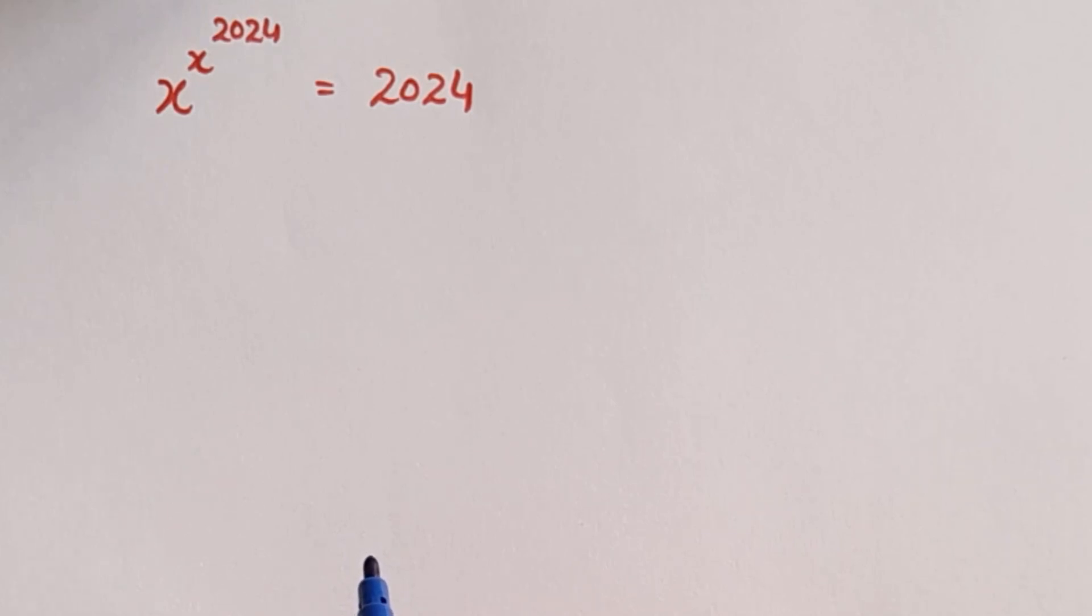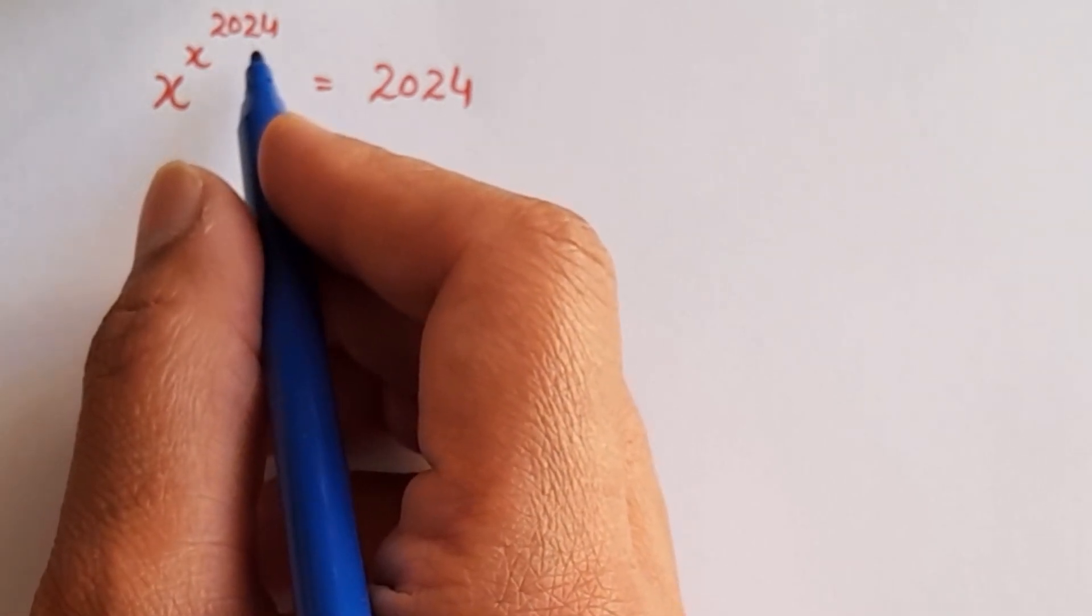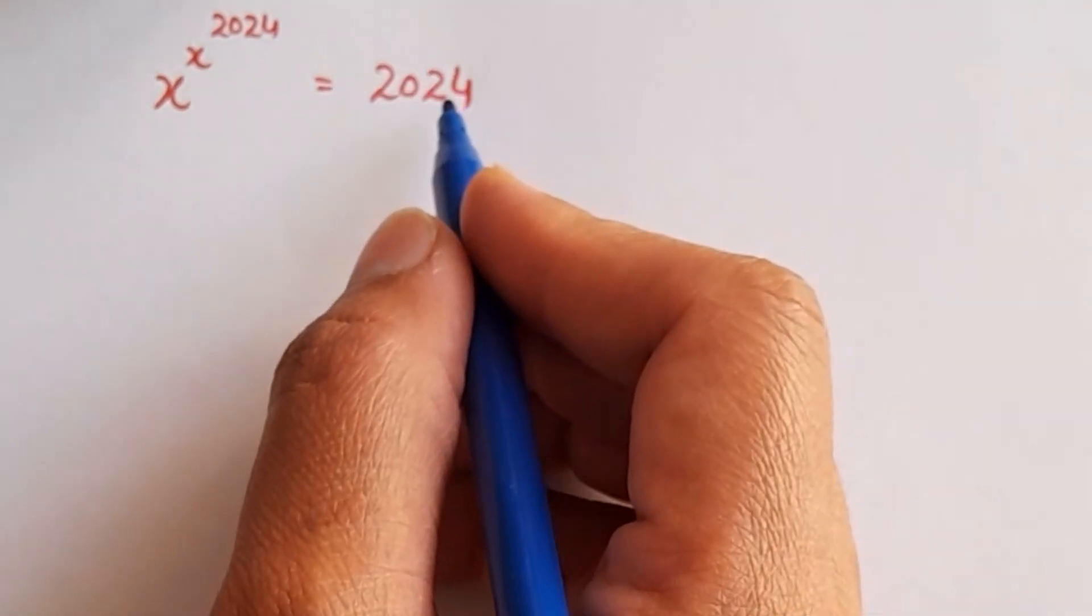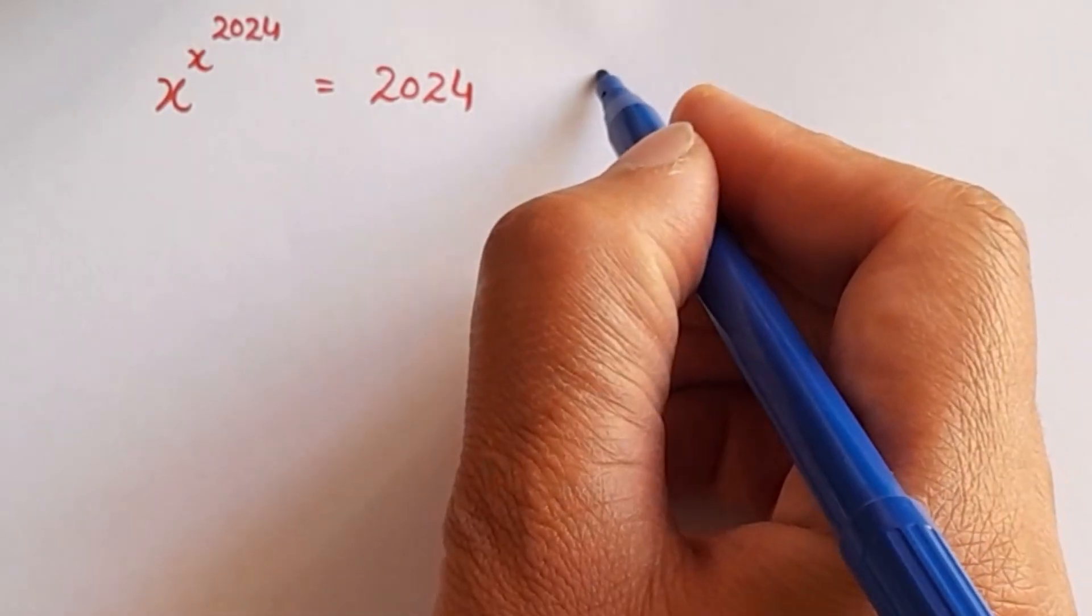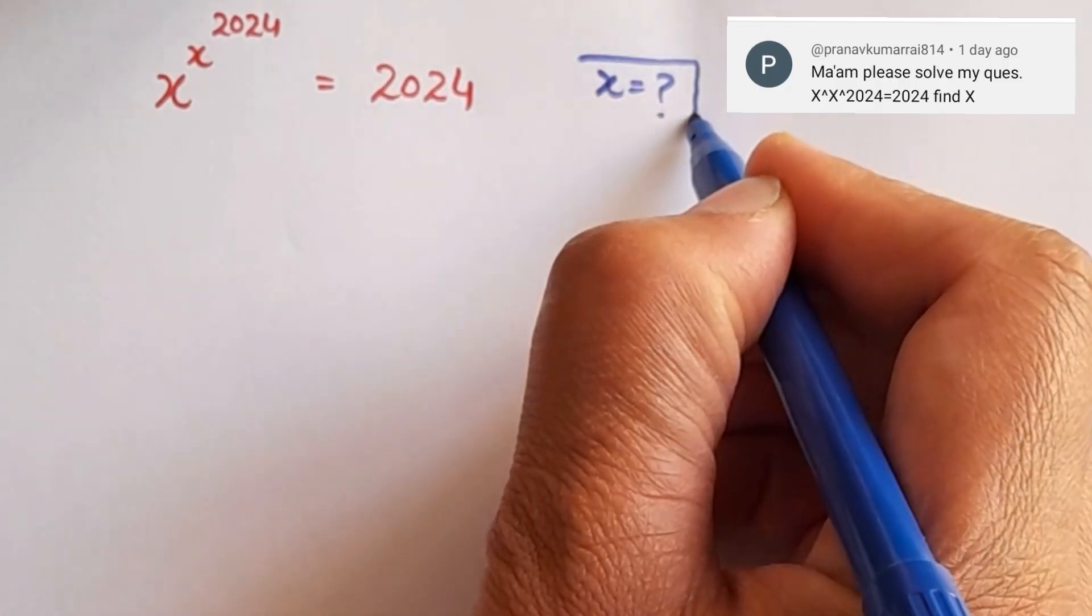Let's look at the equation first. x to the power x to the power 2024 is equal to 2024 and we have to find the value of x in this problem. This is a question asked in the comment box.